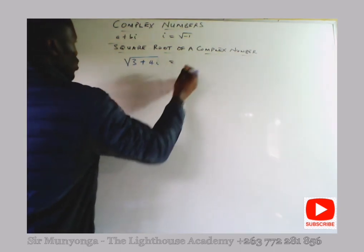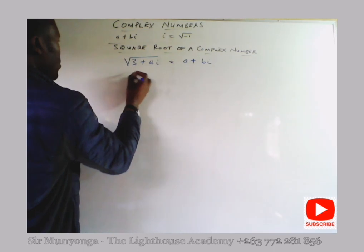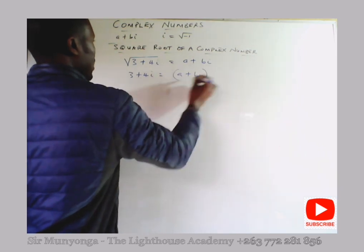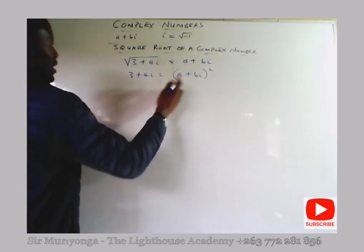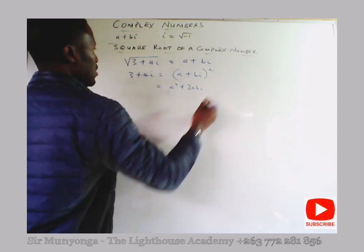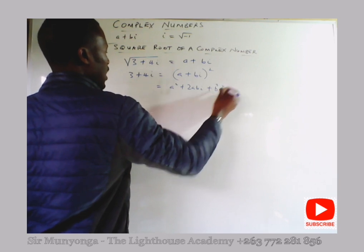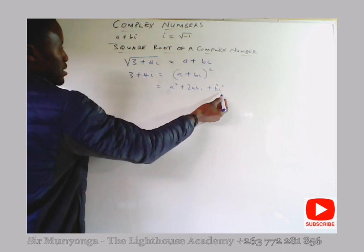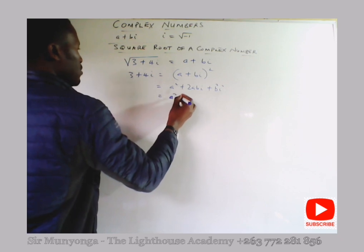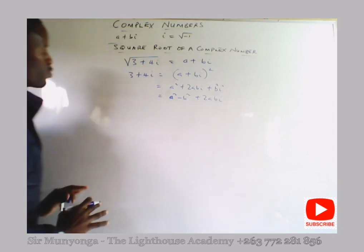Let the square root be equal to a plus bi, so 3 plus 4i equals (a plus bi) squared. Expanding gives a squared plus 2abi plus b squared i squared. Since i squared equals minus one, b squared i squared becomes minus b squared.